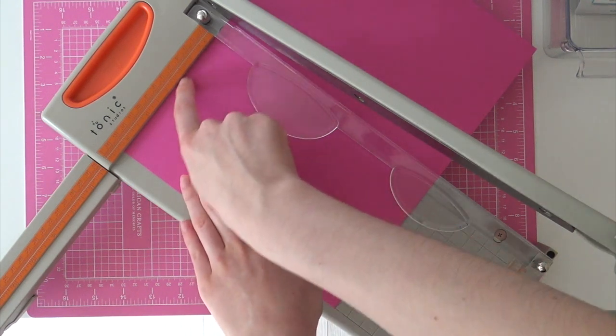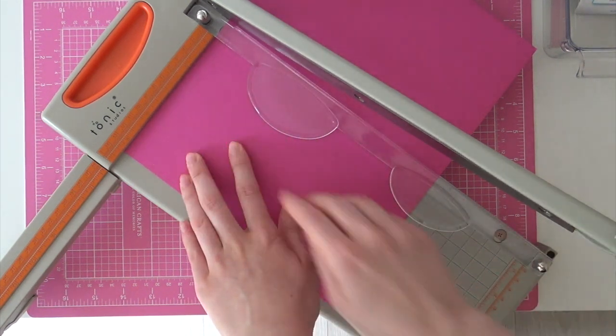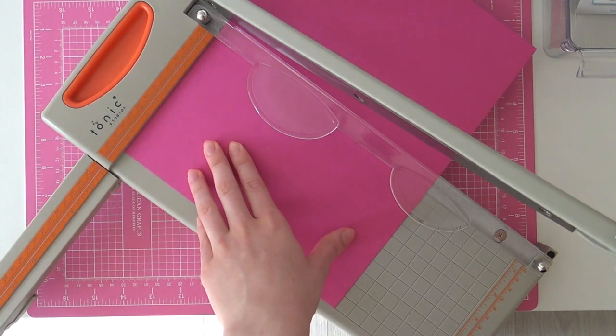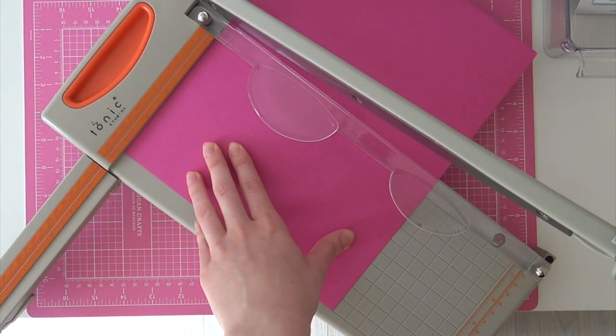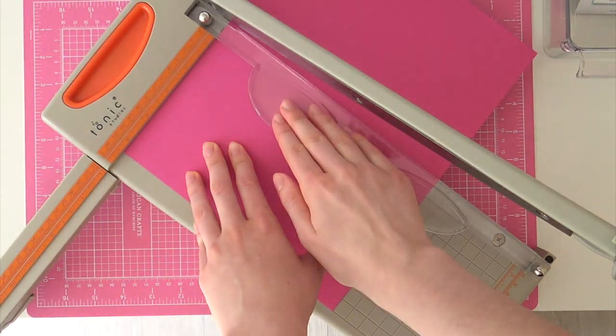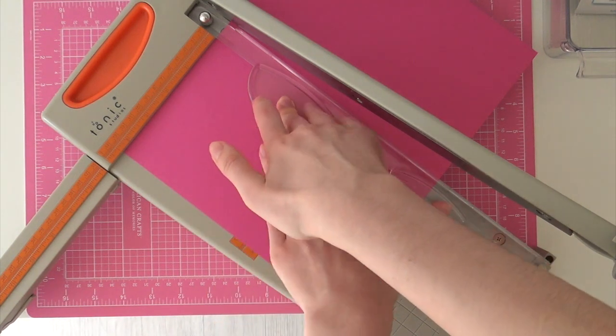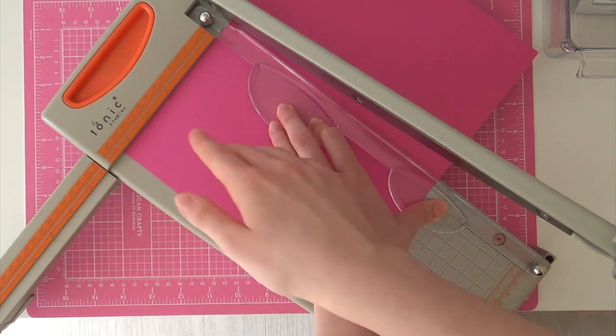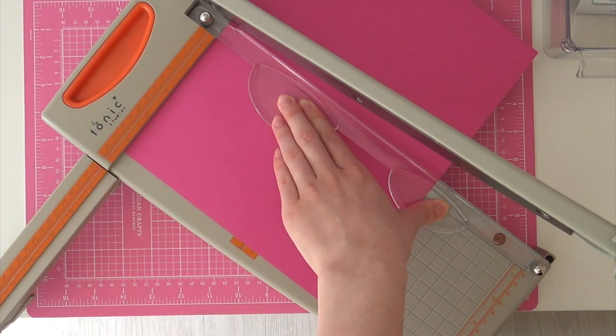Then you're going to line it up with the five and a half marking over here. Make sure it's completely straight by lining it up over here. And then at first I just start to cut but that's not exactly right because you have to push down the safety guards in order to get a nice clean and crisp cut.